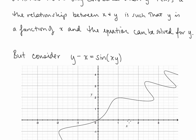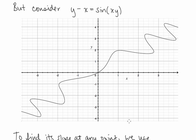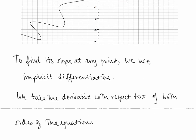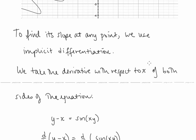But what about a curve like y minus x equals sine of xy? We might be interested in finding the slope of this curve at a particular point, but notice we can't solve this equation for y, and by looking at the graph we can say y is certainly not a function of x. So to find its slope at any point we use implicit differentiation, and this is an application of the chain rule.